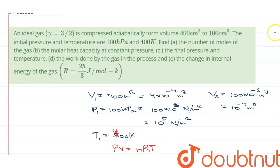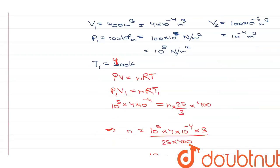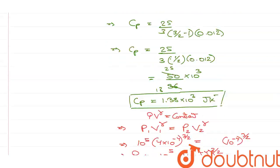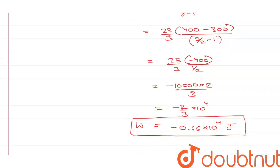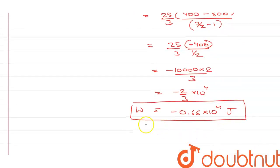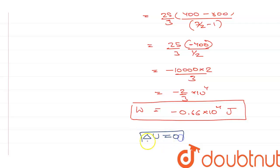Part E asks for the change in internal energy of the gas. For an adiabatic process, since there is no heat being exchanged with the surroundings, all the work done and heat interchange within the system, and therefore the change in internal energy ΔU is equal to 0.